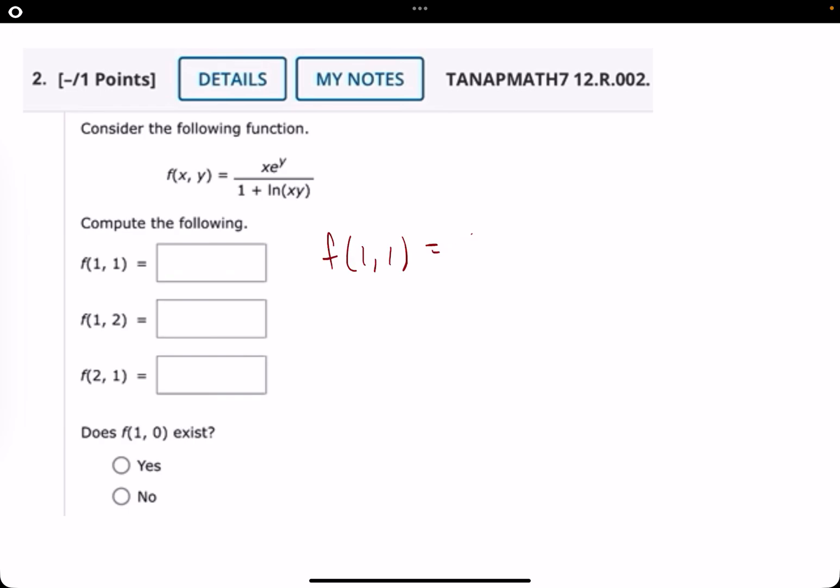f of 1, 1 would be 1e to the 1. So 1e, so just e on top, 1 plus natural log of 1 times 1, which is 1. It's important to note that ln of 1 is just 0. So really, this is just e over 1, which is just e.